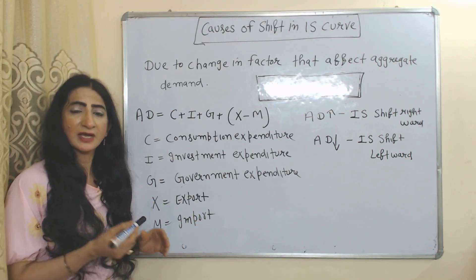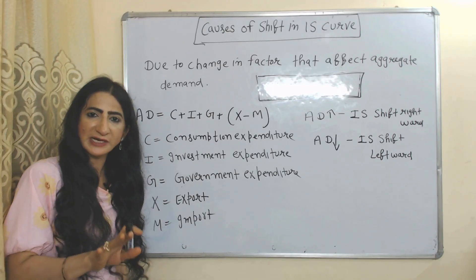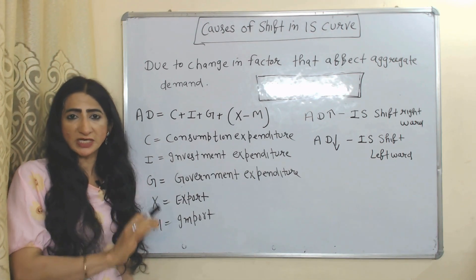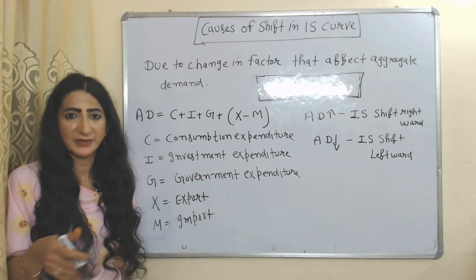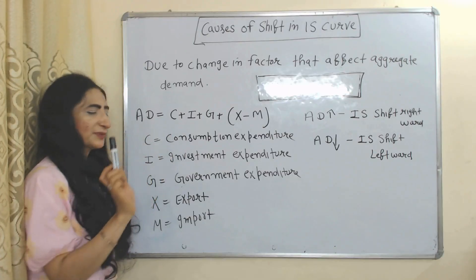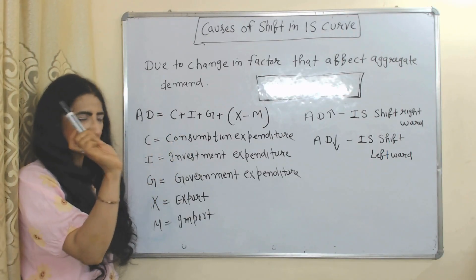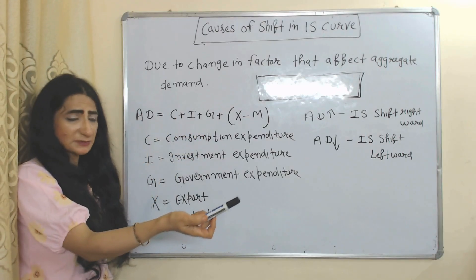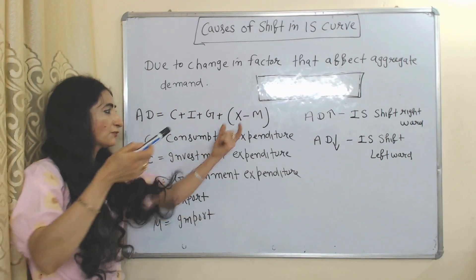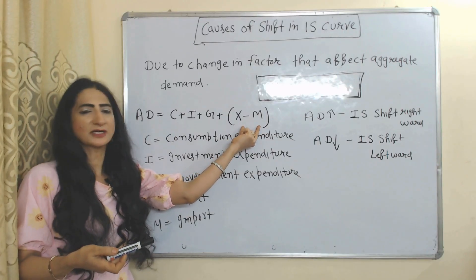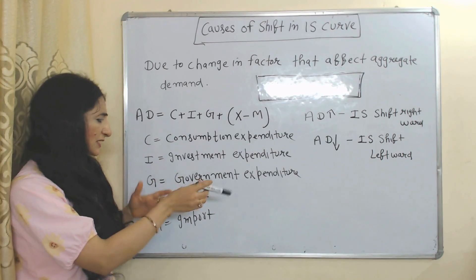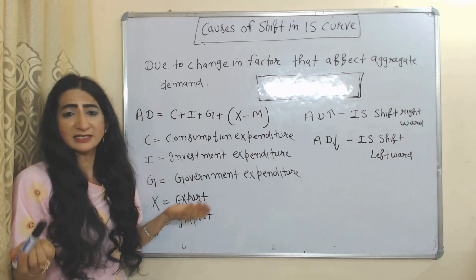Now we will see the causes of shift in the IS curve. The IS curve shifts due to change in factors that affect aggregate demand. Aggregate demand equals C plus I plus G plus X minus M, where C is consumption expenditure, I is investment expenditure, G is government expenditure, M is imports, and X is exports. The term X minus M represents net exports.